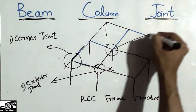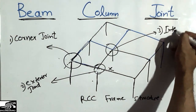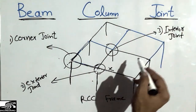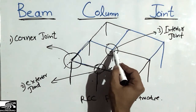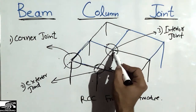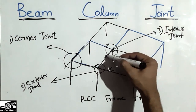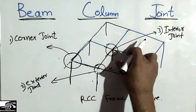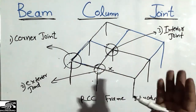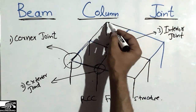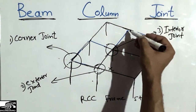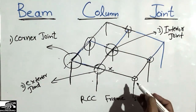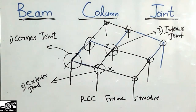The third type is the interior joint. In an interior joint, the beam passes through all faces of the column. The interior joint is always located at the center of the RCC structure, while the exterior joint is always on the periphery of the structure. The corner joints are those located at the corners of the structure.